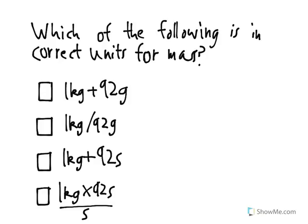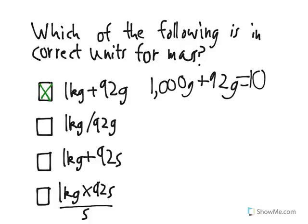Hopefully you all had some idea of what was going on there. The first answer is correct. Kilograms and grams are the same unit of measurement, just with a different prefix. So we can actually write this out as 1,000 grams plus 92 grams, which comes out to 1,092 grams. And since grams is a measurement of mass, that's an acceptable answer.